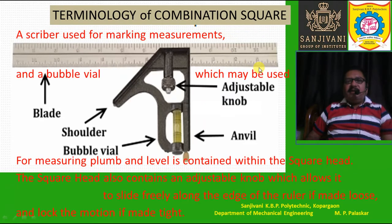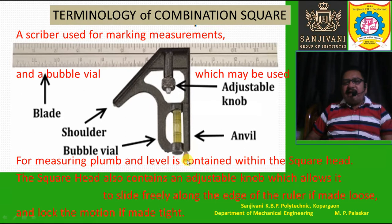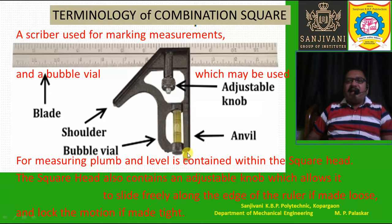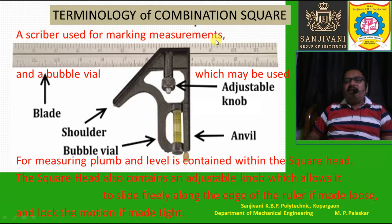A scriber is used for marking measurements. It is fixed in the square head and is pointed at the other end. It can be removed — rotated and removed from its slot — and used for marking measurements or drawing straight lines on the job.